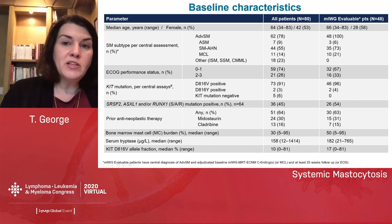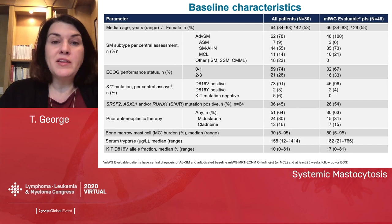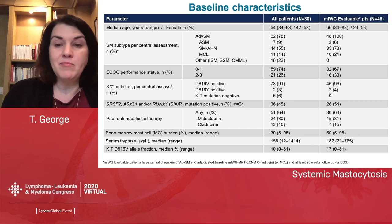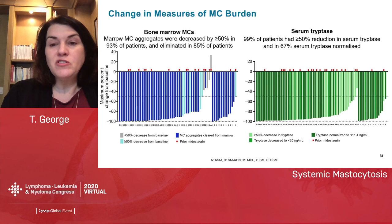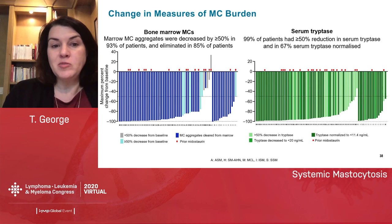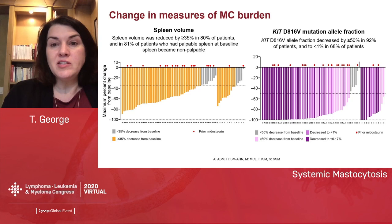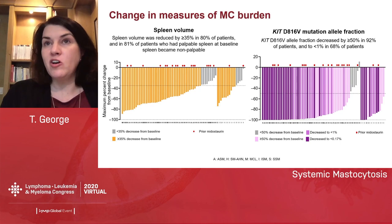Upon central review by the study steering committee, not all patients enrolled actually had advanced SM. Waterfall plots showed a marked reduction in bone marrow mast cells and serum tryptase in treated patients. There were also decreases in spleen volume and decreases in the KIT-D816V mutant allele fraction, measured by a very sensitive quantitative PCR method in the bone marrow.